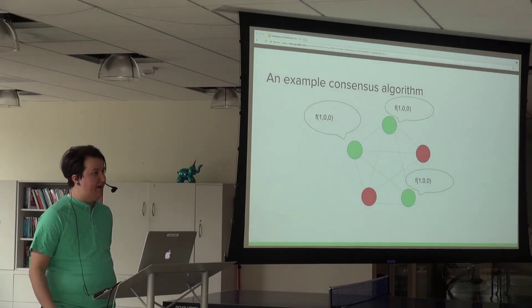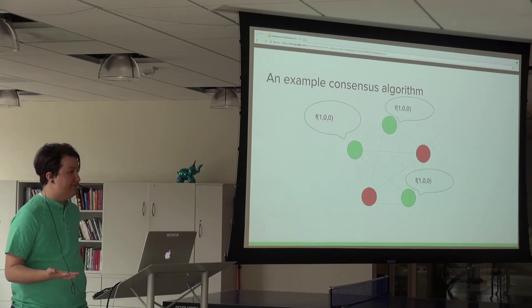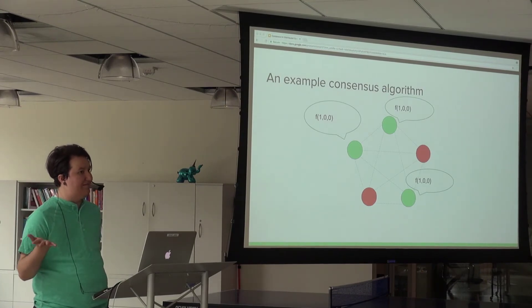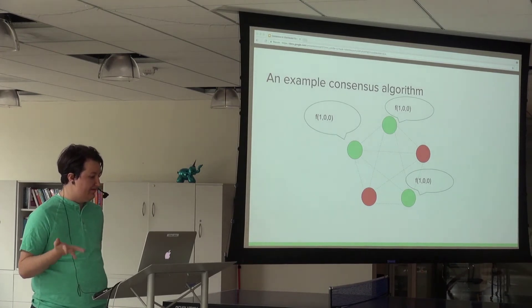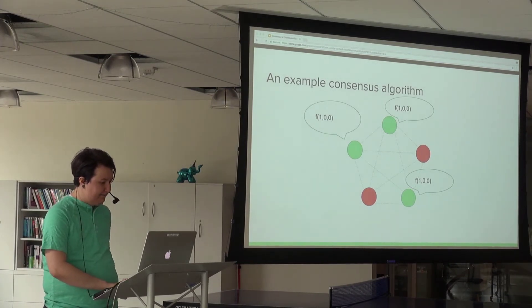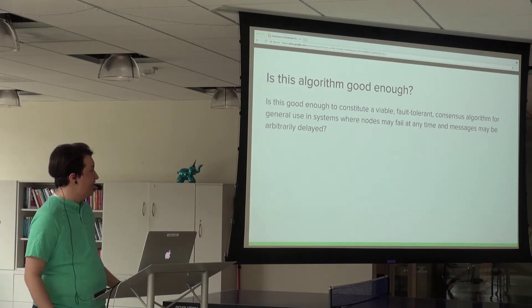Unfortunately, if a node goes down during consensus formation, you'll get into a deadlock scenario where nodes wait forever for messages that will never come. So what happens if we do have a system where nodes can go down? Can we get a consensus algorithm that will consistently work?